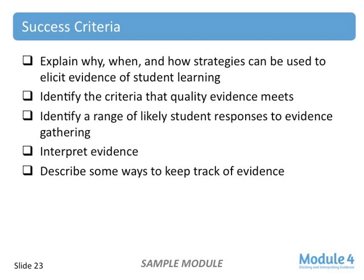The success criteria are for participants to guide themselves through the module. At the end, they're supposed to be able to explain why, when, and how strategies can be used to elicit evidence of student learning. We want to model good formative assessment practice, so at the end of each module we spend some time asking participants to reflect and rate themselves with respect to the success criteria, and then give them suggestions if they feel they haven't met the criteria about how they can develop further.